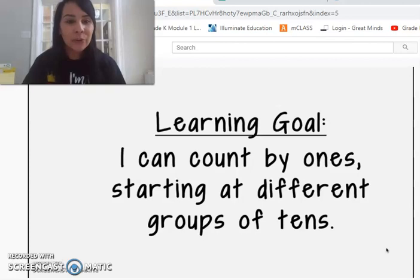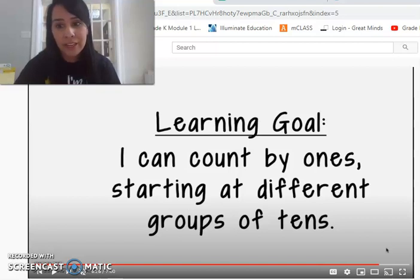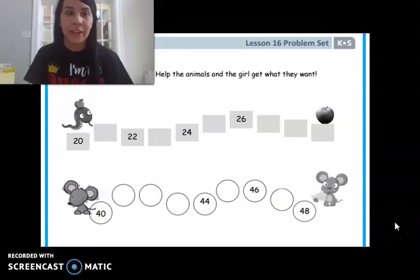So today our learning goal was I can count by one starting at different groups of 10. Good job guys. And this is just a fancy way of saying I can count by one starting at a really big, amazing, large number. And you guys did it. Okay. So let's go ahead and let's go on to our workbook.